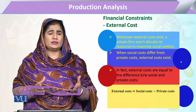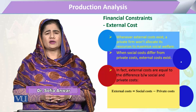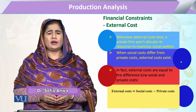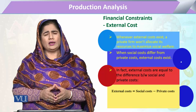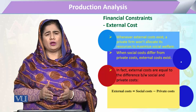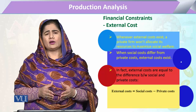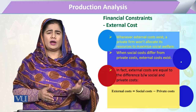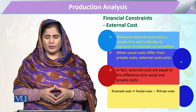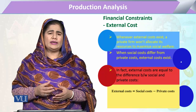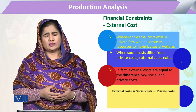Where is the external cost? There are certain factors which we call externalities — which we are not accounting for, but in a production procedure they are present. They can cause either loss or certain benefits to the society or to that person. When we deal with the social aspects, we can say that they do exist.